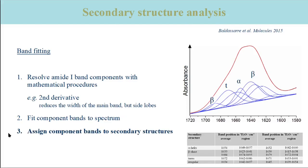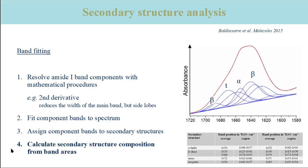In Step 3, from the final band positions, the bands are assigned to secondary structures using tables like the one shown earlier, which is reproduced here in small scale. Finally, in Step 4, the band areas for each secondary structure are summed up and divided by the total area of all bands in the amide-1 region. This gives the secondary structure contribution of each secondary structure.